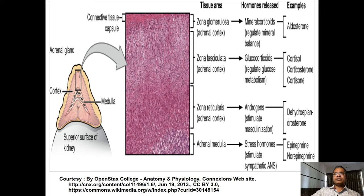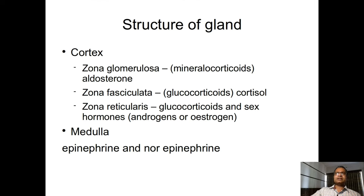The deepest layer of the cortex is the zona reticularis. Its cells are also polyhedral in shape but are haphazardly arranged in collections. Between these collections of cells, there are sinusoids and capillaries.